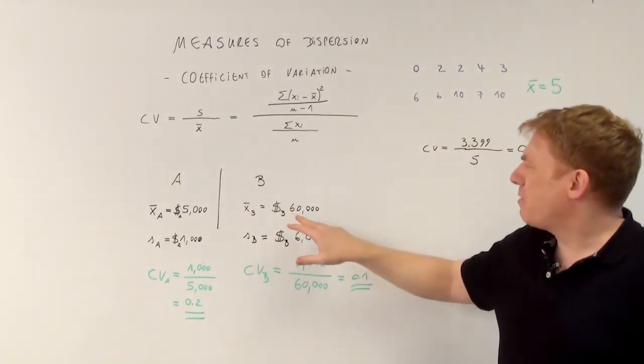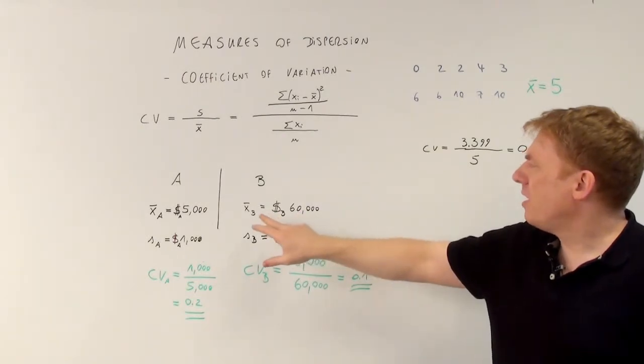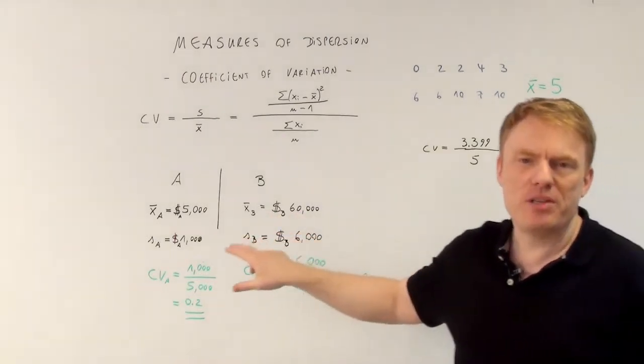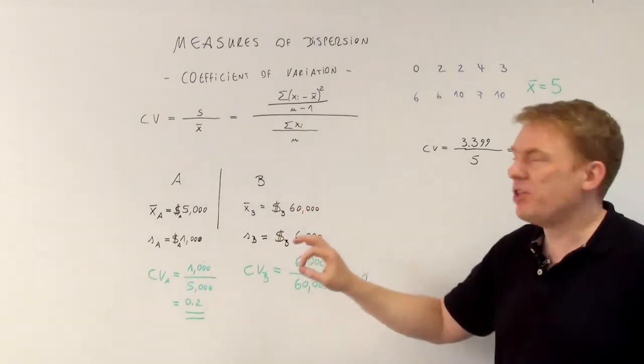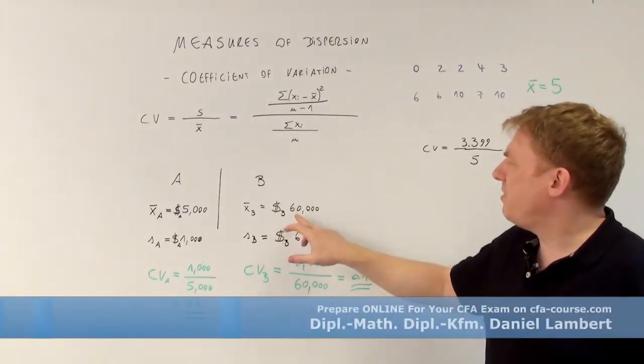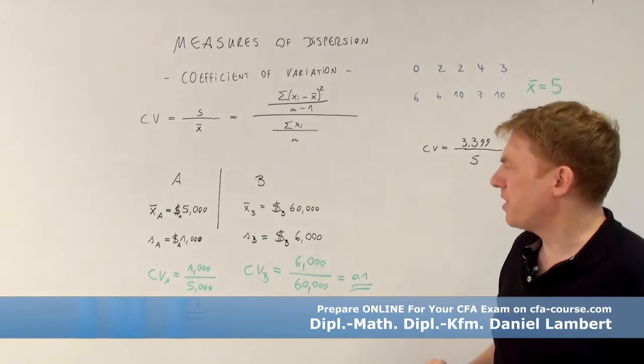Whereas the arithmetic income, the average income, the arithmetic mean of country B, the average income of country B would be $60,000 of country B.